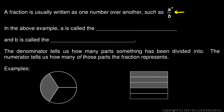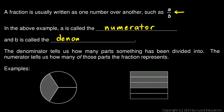The part on top is called the numerator — N-U-M-E-R-A-T-O-R. The part below the fraction bar is called the denominator — D-E-N-O-M-I-N-A-T-O-R. The denominator tells us how many parts the whole has been divided into, and the numerator tells us how many of those parts the fraction represents.